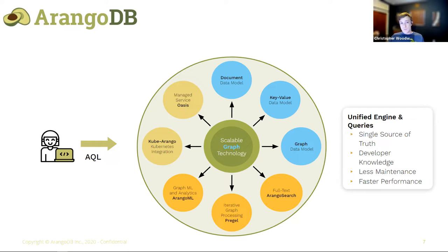ArangoML consists of a number of tools, not just Arango Pipe. It also includes adapters and integrations for things like NetworkX, DGL, and we're working on embedding support — including NVIDIA Triton embedding support. We're a part of the NVIDIA Inception program now, which is very recent. We also have a Kubernetes integration called Kube Arango, which is the backbone for our managed service Oasis, our cloud managed platform supporting Azure, Google Cloud, and AWS.